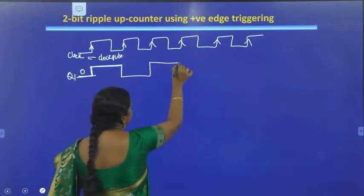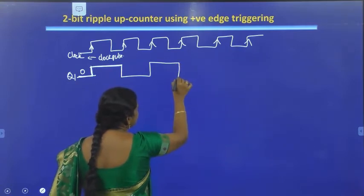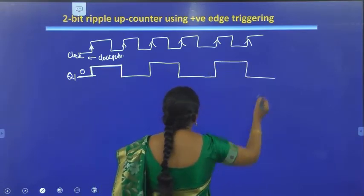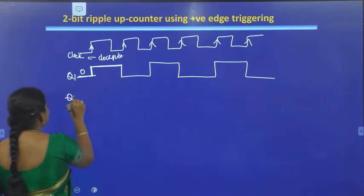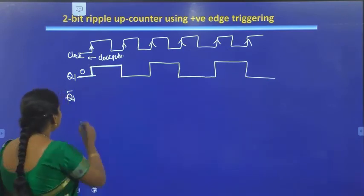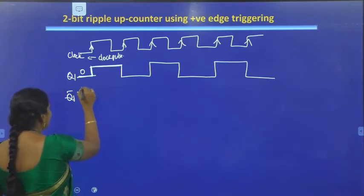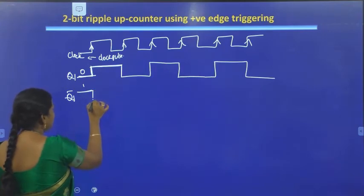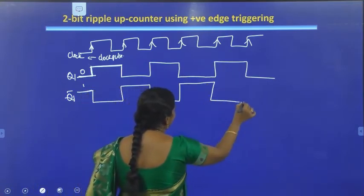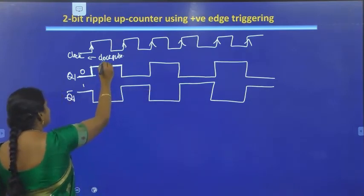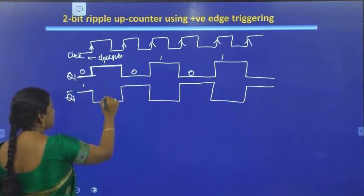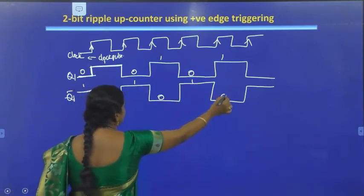Q1 changes state at each rising edge: starting at 0, it goes 0, 1, 0, 1. Now we derive Q1 bar — the complement of Q1 — which serves as the clock pulse for the second flip-flop. Q1 bar starts at 1, then goes 1, 0, 1, 0. We then identify the rising edges of Q1 bar to derive Q2.